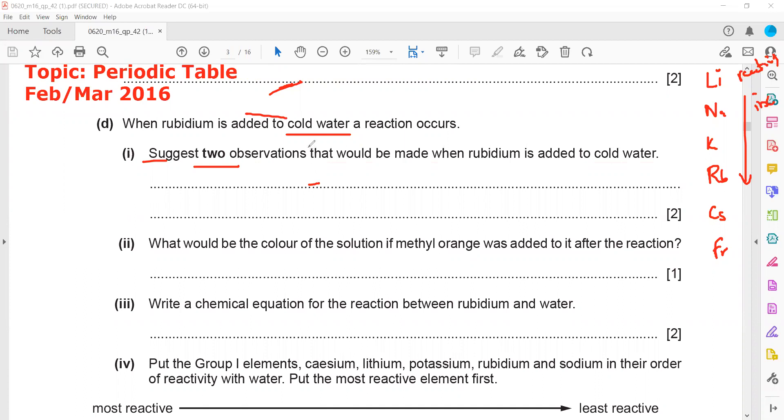But here we have to state observations. We don't have to mention what the products will be. Observation means what we will see. So basically, when we add rubidium metal to water, it will make an alkaline like rubidium hydroxide plus hydrogen. Hydrogen gas, so we will see bubbles.